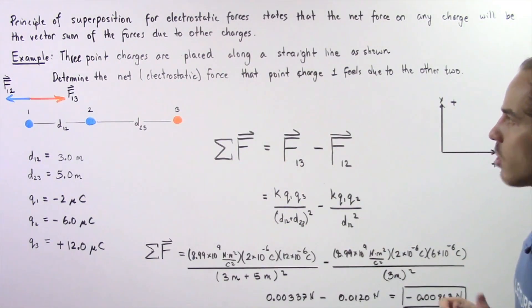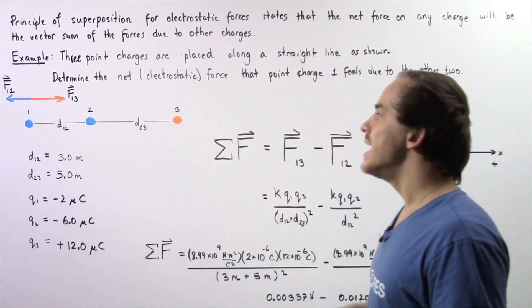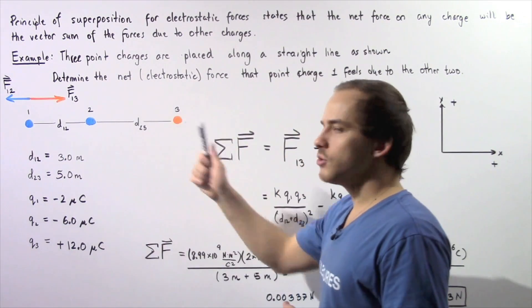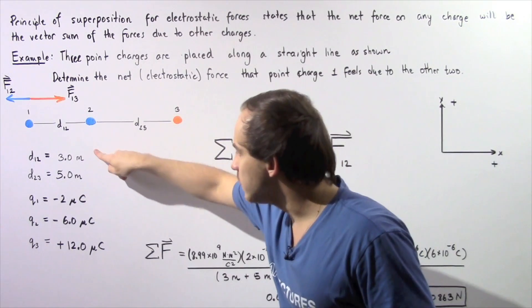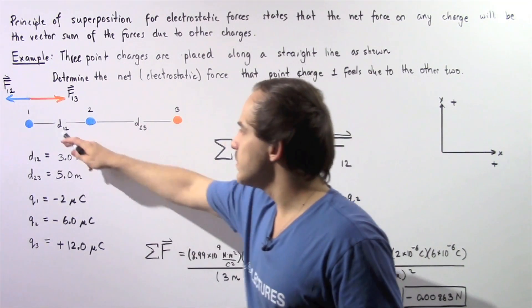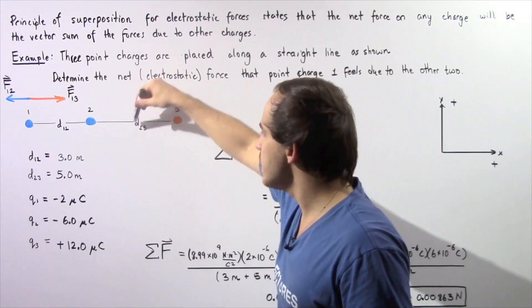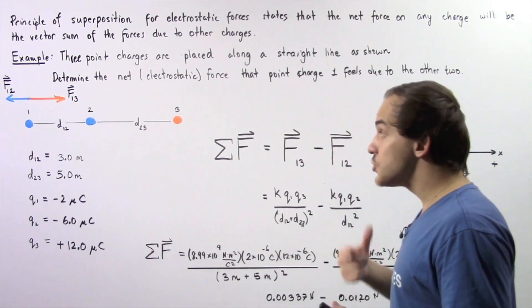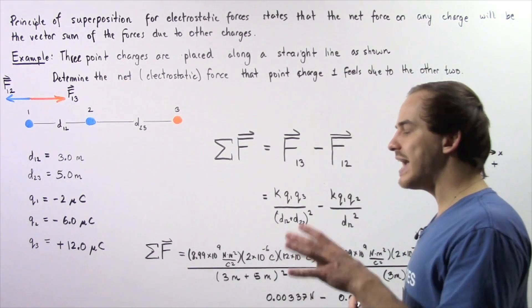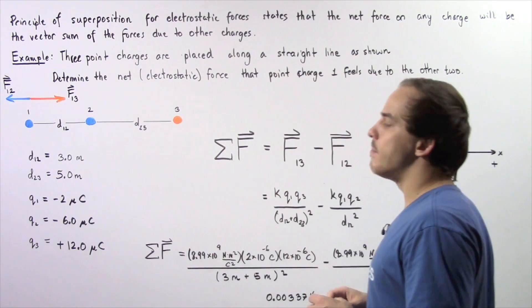Three point charges are placed along a straight line as shown in the diagram — point charges 1, 2, and 3. We need to determine the net electrostatic force that point charge 1 feels as a result of the other two. The distance between point charges 1 and 2 is 3 meters, and the distance between point charges 2 and 3 is 5 meters. The charge on point charge 1 is negative 2 microcoulombs, on point charge 2 is negative 6 microcoulombs, and on point charge 3 is positive 12 microcoulombs.